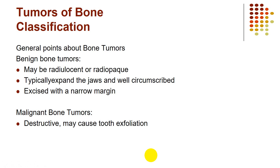General points about bone tumors: benign bone tumors like the osteoma can be radiolucent or radiopaque according to the activity of the tumor cells and the type of bone they are producing. Cancellous bone is relatively radiolucent compared to compact bone. Benign tumors typically expand the jaws and are well circumscribed because they are slowly growing. Their treatment is excision with a narrow margin.